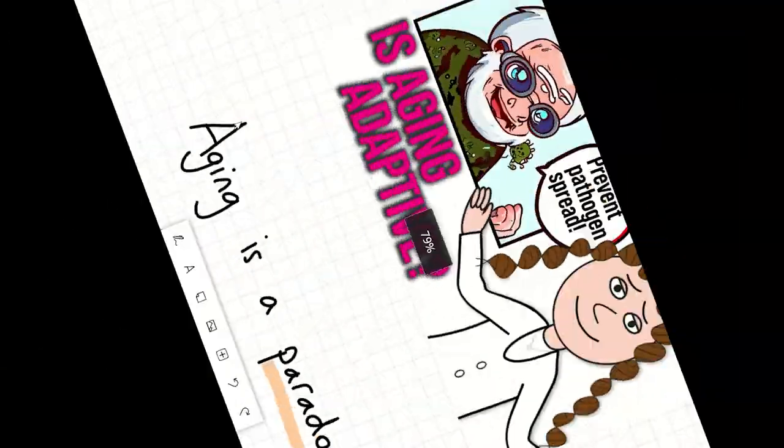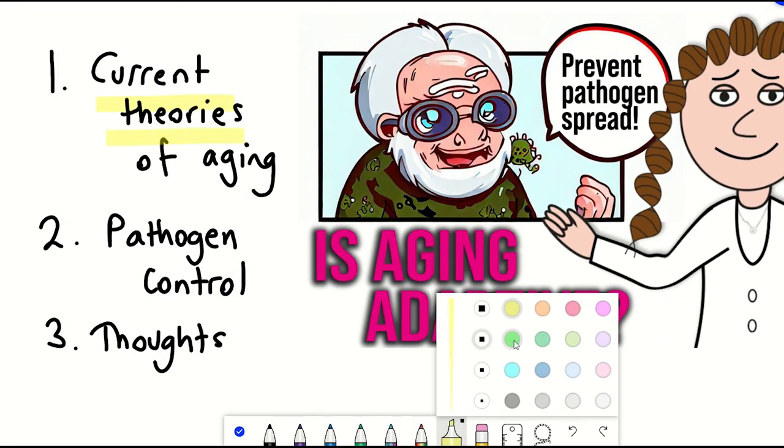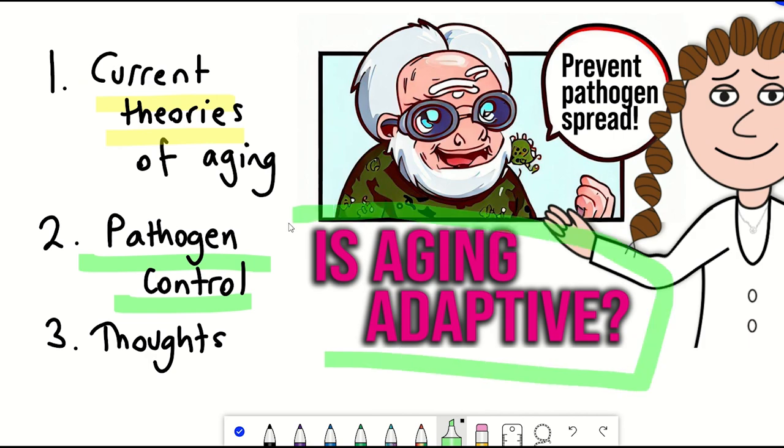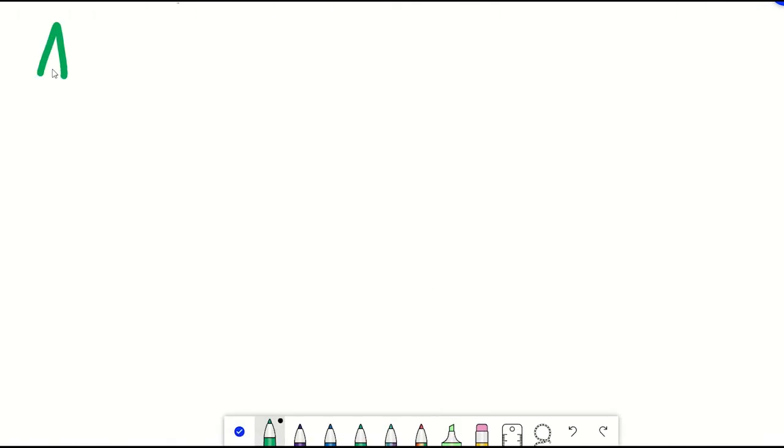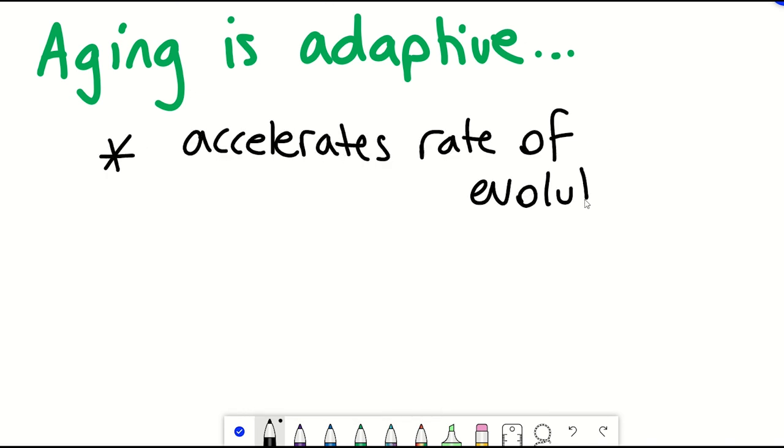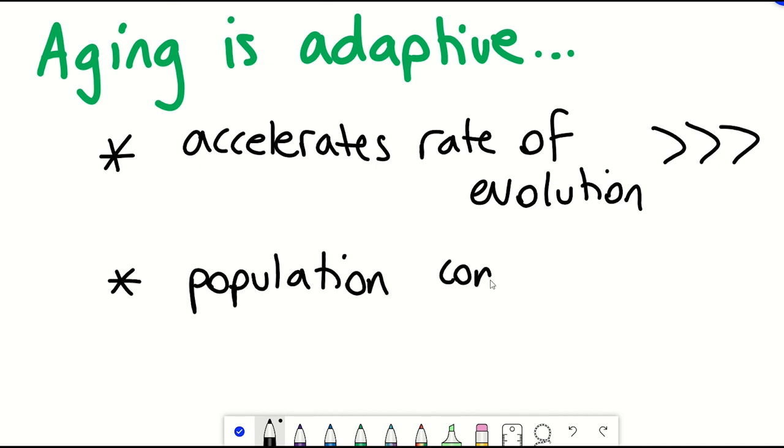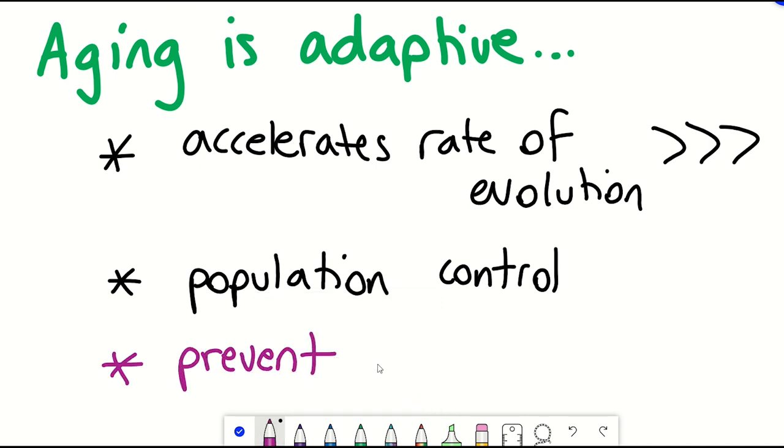So let's actually just flip this whole thing on its head and ask instead, could aging be adaptive? Now, there are some arguments about living longer and being able to pass on valuable bits of information. But two other theories suggest that aging is adaptive because it accelerates evolution. And another hypothesis is that it's for population control. However, both these theories could be dismissed by considering that there are other methods besides aging to control for population size or to accelerate evolution.